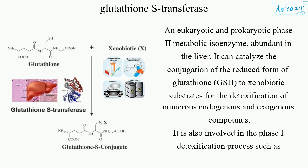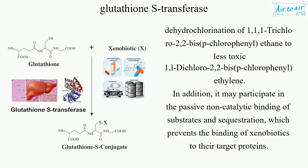It can catalyze the conjugation of the reduced form of glutathione, GSH, to xenobiotic substrates for the detoxification of numerous endogenous and exogenous compounds. It is also involved in the phase I detoxification process, such as dehydrochlorination of 1,1,1-trichloro-2,2-bis(p-chlorophenyl)ethane (DDT) to the less toxic 1,1-dichloro-2,2-bis(p-chlorophenyl)ethylene (DDE).